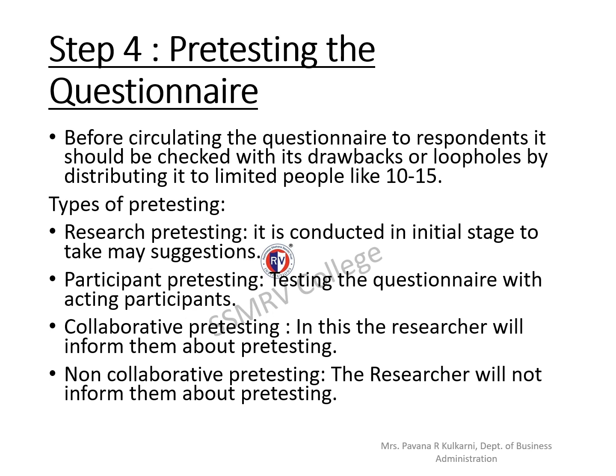Moving on to the fourth step: pre-testing the questionnaire. Before circulating the questionnaire to respondents, the researcher distributes it to a limited number of people — around 10 to 15. There are various types of pre-testing available. Research pre-testing is conducted in the initial stage to take suggestions; any suggestions provided by respondents will be incorporated into the questionnaire.